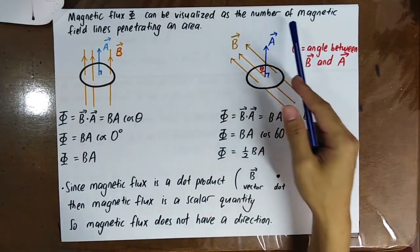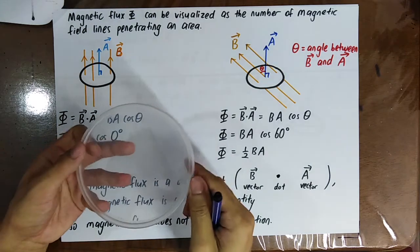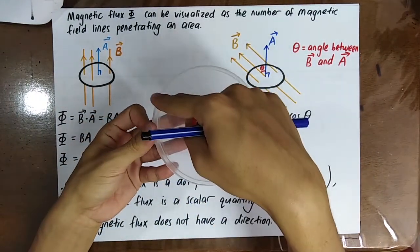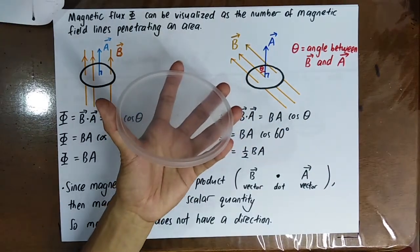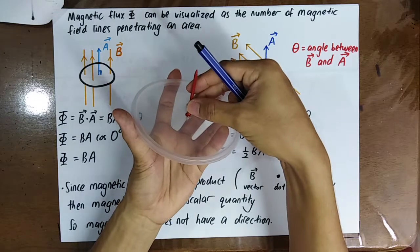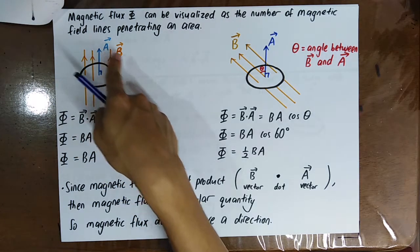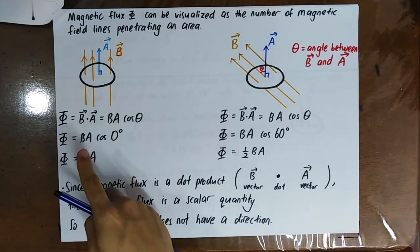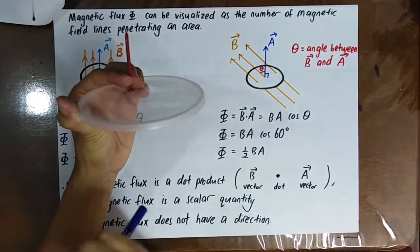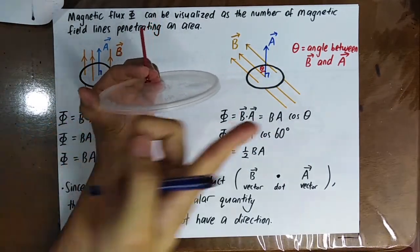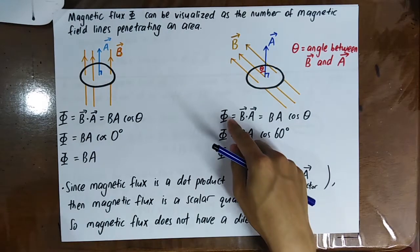By the same reasoning, magnetic flux can also be visualized as the number of magnetic field lines penetrating through an area. For example, if you have a coil surrounding an area, the surface area vector is perpendicular to that area. When the magnetic flux density is parallel with the area vector, the magnetic flux is maximum. When the area vector is perpendicular to the magnetic field, the magnetic flux is minimum.